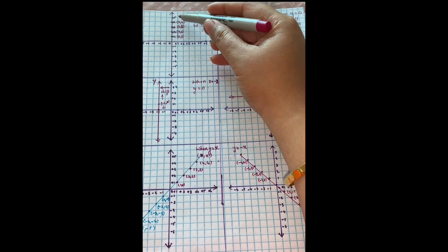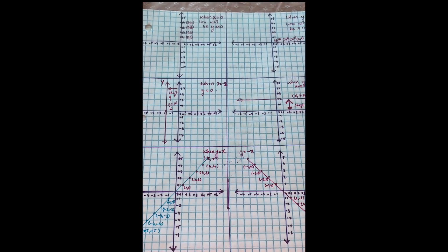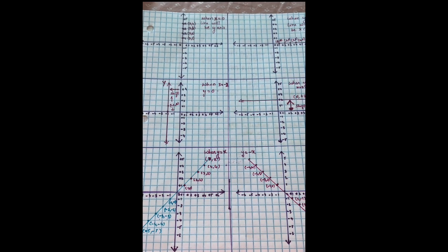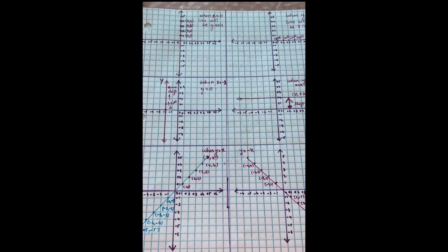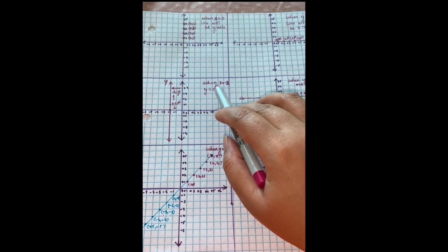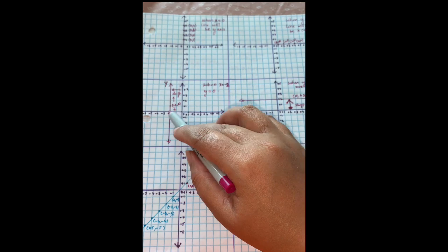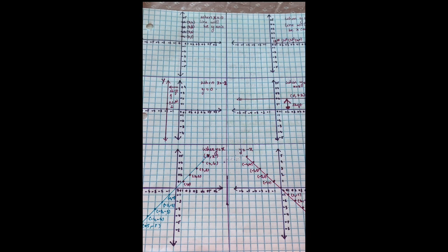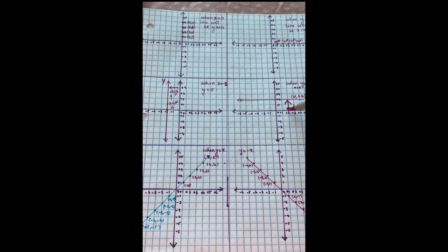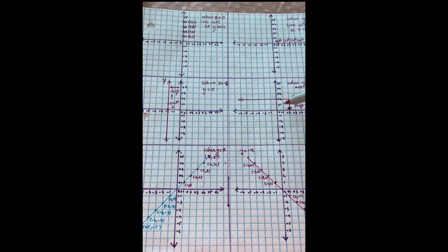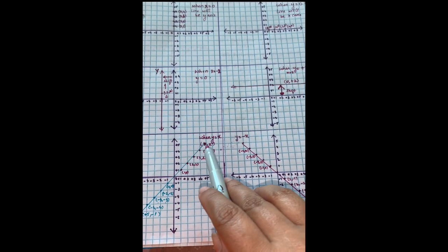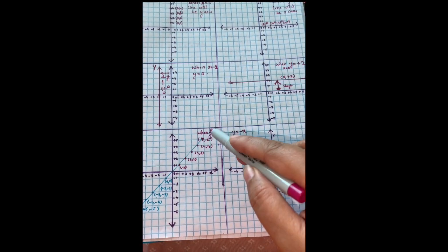Some basic facts about the Cartesian coordinate system: when x equals 0, the line is the y-axis and the values of x on the y-axis are 0. When y equals 0, the line is the x-axis and the values of y are 0 for points on the x-axis. When x equals -2, the y-axis shifts to x = -2. When y equals +2, the x-axis shifts to y = +2. When y equals x, the line has a positive slope.